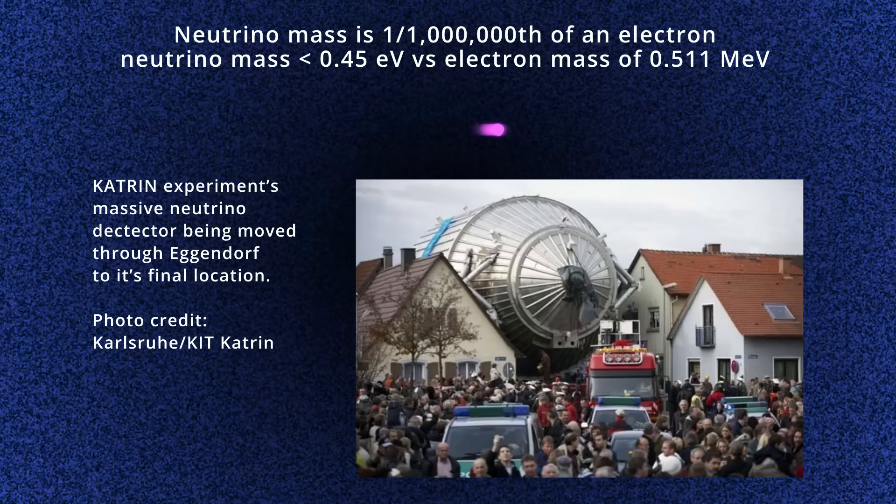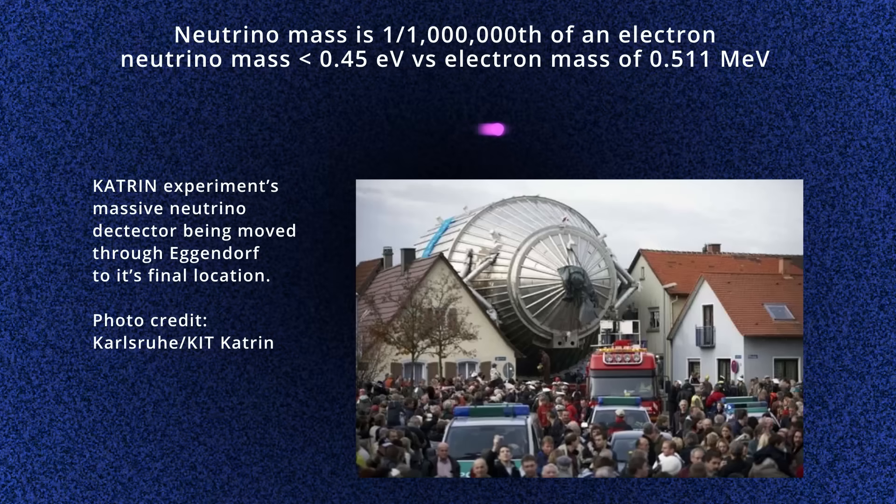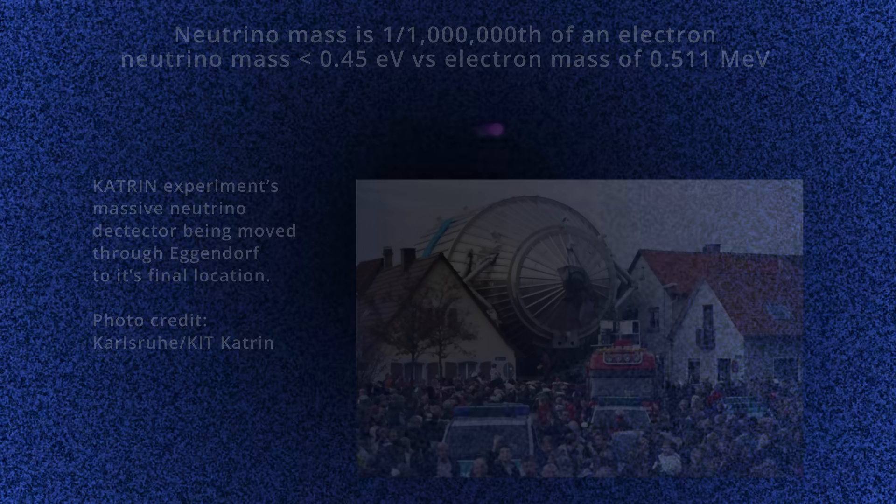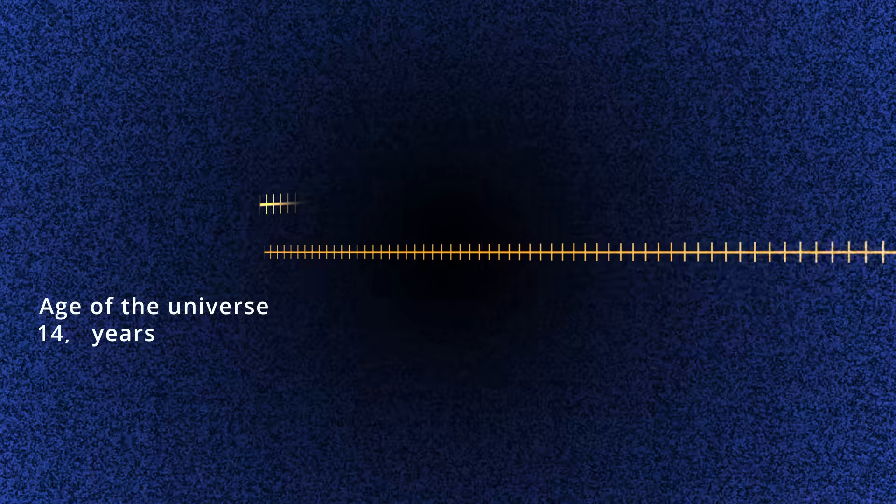Neutrinos can only change their spin because of this mass. Now that their mass is so tiny, it reduces an already rare double beta decay process even more.